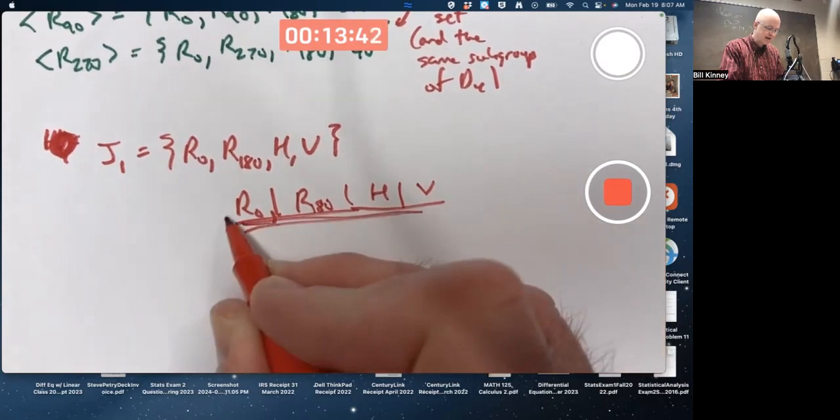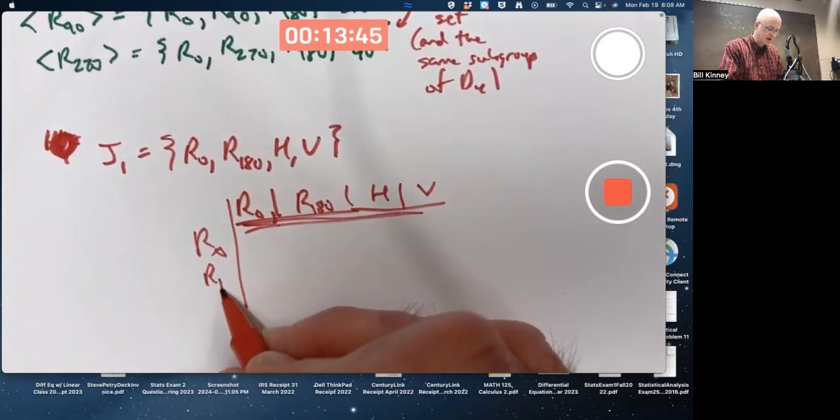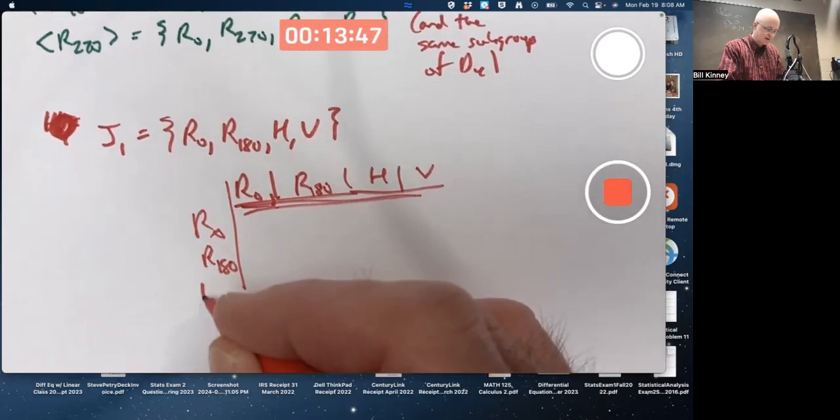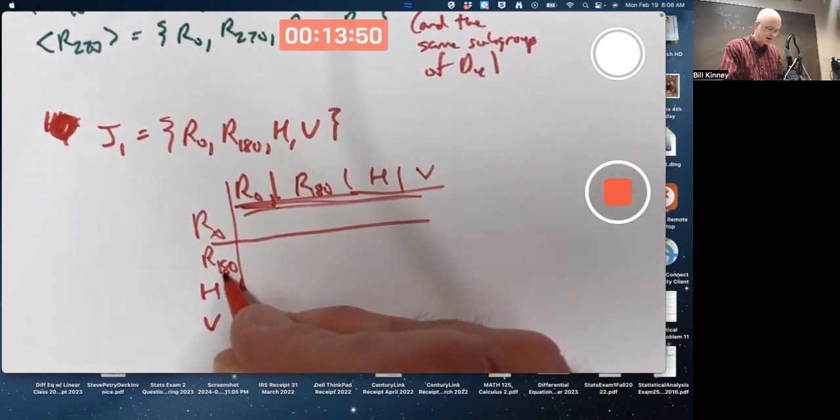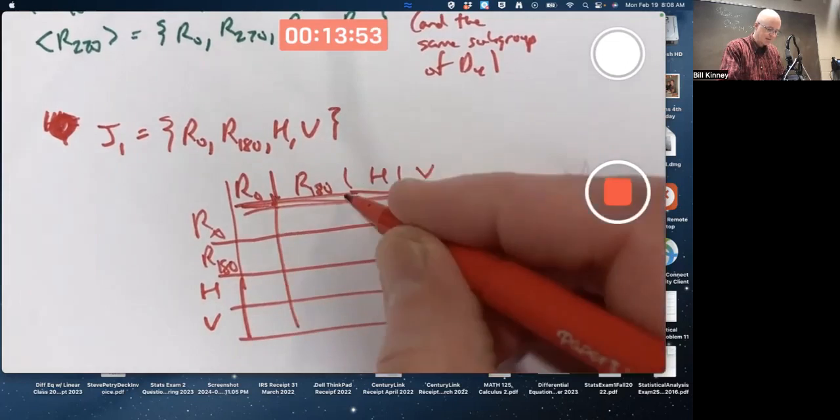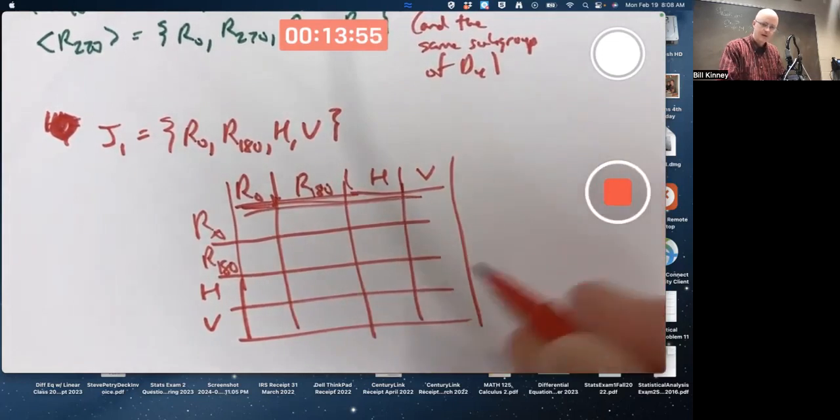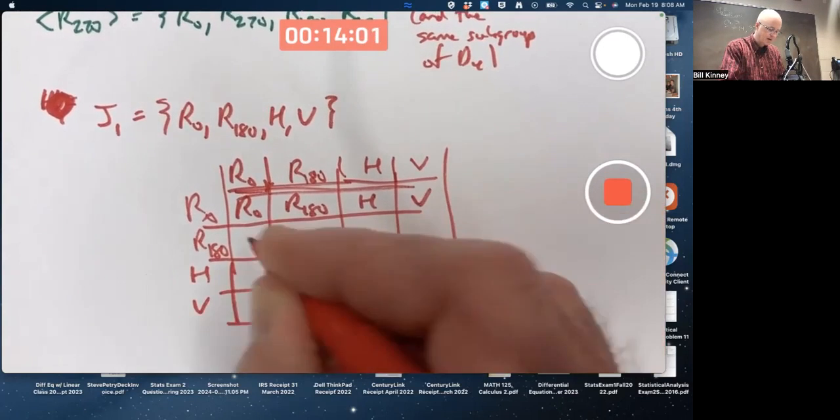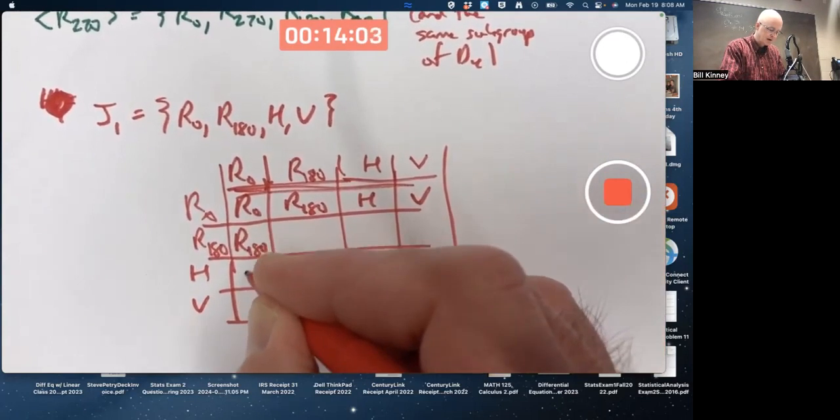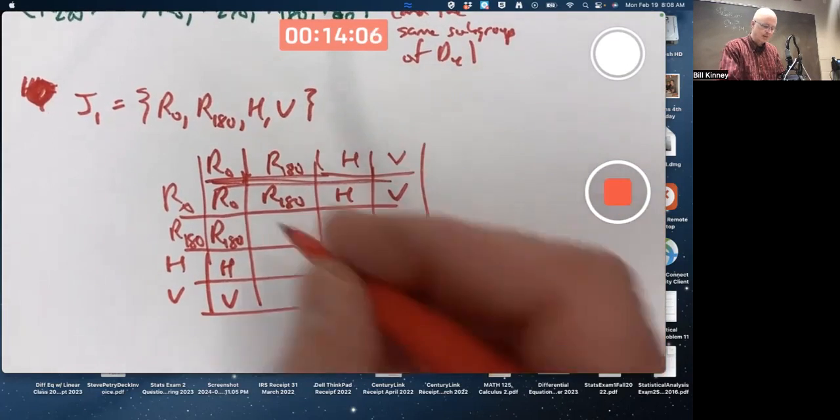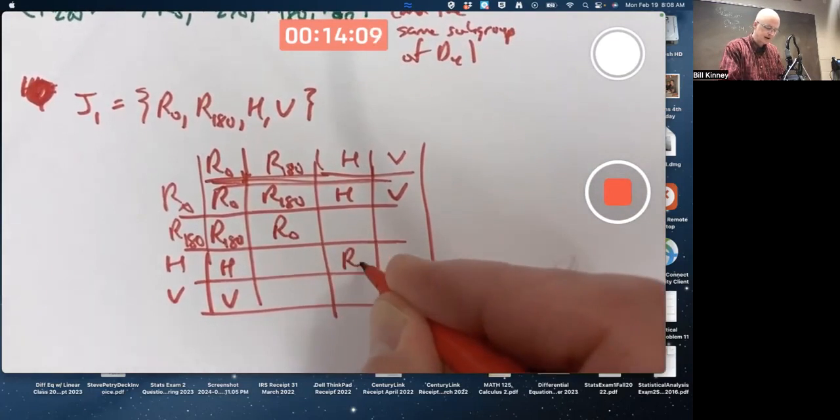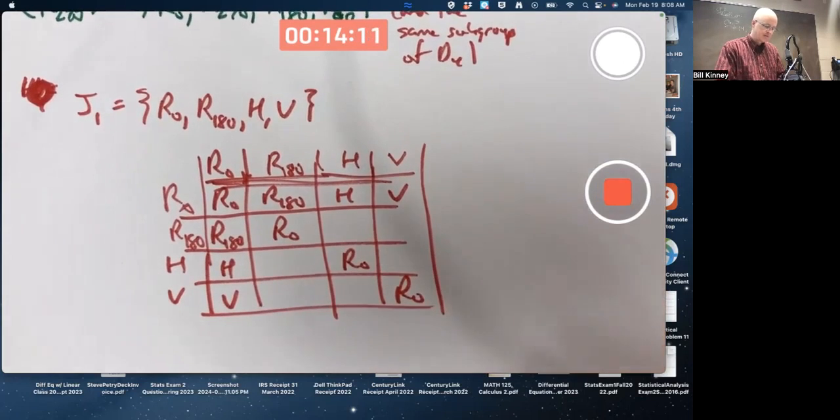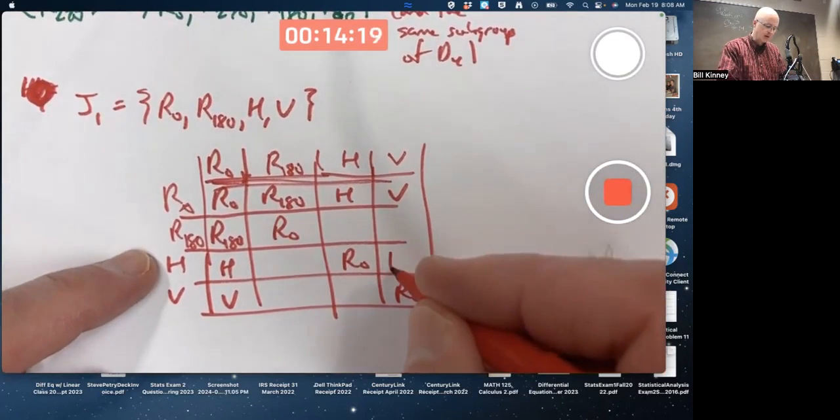Let's go ahead and make a Cayley table here, a sub Cayley table of the bigger one, to see if closure is satisfied or not. R0 is the identity, so we can quickly fill in those parts. Every element has order 2, so along the main diagonal, you're going to get a bunch of R0s, the identity. In the Cayley table we just looked at, the bigger one, we saw that H composed with V in either order was R180.